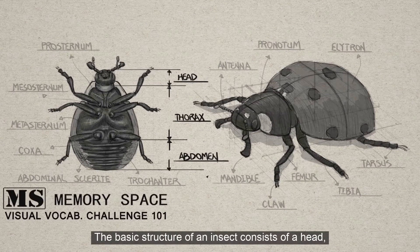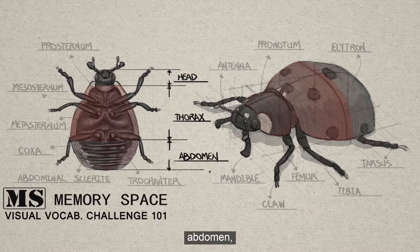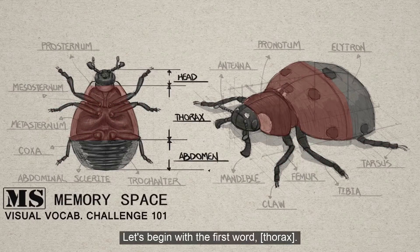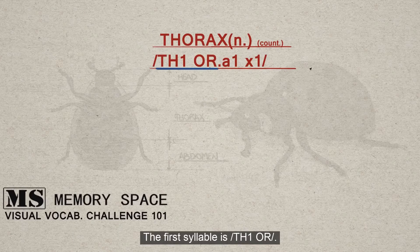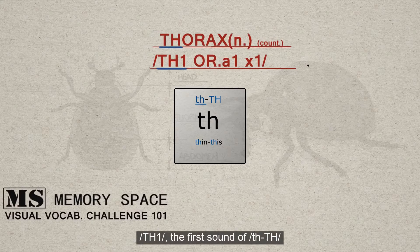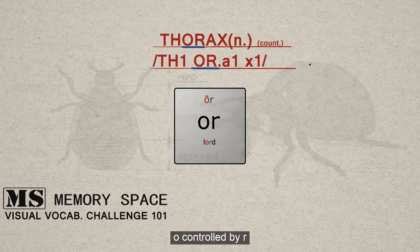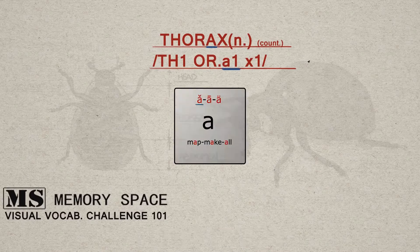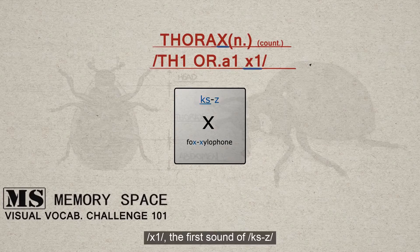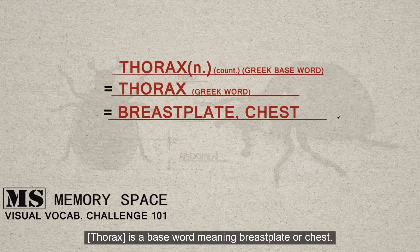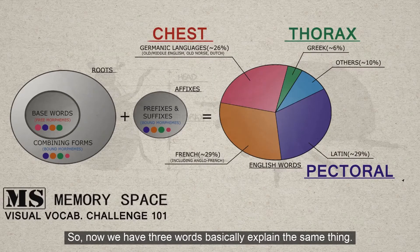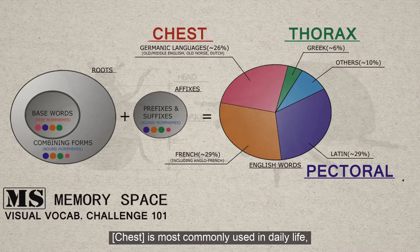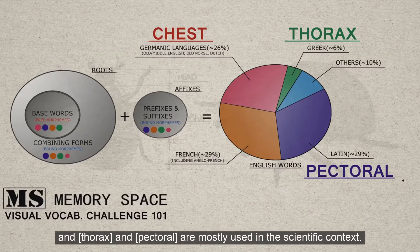The basic structure for insects consists of head, thorax, abdomen, and three pairs of legs. Let's begin with the first word, thorax. Thorax has two syllables and the stress is at the first one. Thorax is a base word meaning breastplate or chest. If you've watched the previous episode, pectoral also means breast or chest. So now we have three words that basically explain the same thing. Chest is most commonly used in daily life, and thorax and pectoral are mostly used in the scientific context.